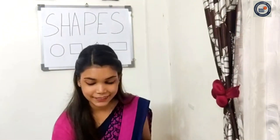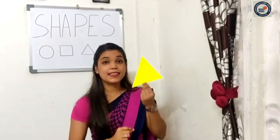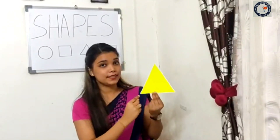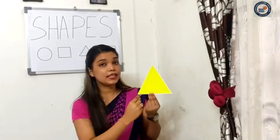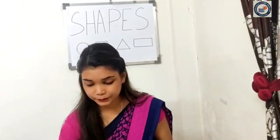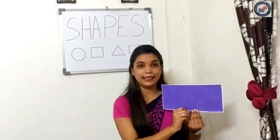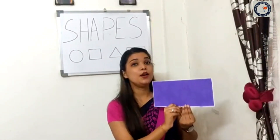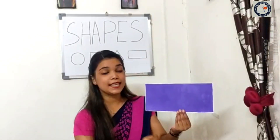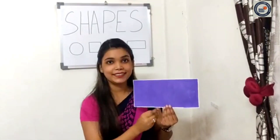This is a triangle, and it has three sides. This is a rectangle. It has two small sides and two big sides. Yes children.